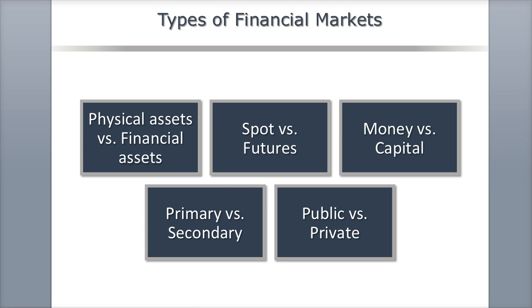Money markets are short-term, highly liquid debt markets with instruments typically having a life of less than a year — considered safer and paying lower interest. Capital markets are the long-term markets where bonds and stocks live, such as the New York Stock Exchange and the NASDAQ, where longer-term assets are traded.